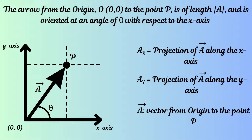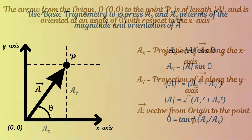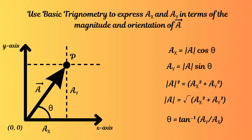Let us assume that to join the point p with the origin, we have to draw an arrow of some length a, oriented at an angle theta relative to the x axis. Because this arrow has both a length and a specific direction, it will be a vector, which we can call vector a. Let us call the projection of this vector a along the x axis as ax. This means ax is the x component of vector a along i or the x axis. Similarly, ay is the projection of vector a along j or the y axis. From basic trigonometry, ax is equal to a times cosine of theta, and ay is equal to a times sine of theta. The square of the magnitude of a is equal to ax squared plus ay squared.